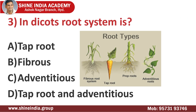The third question: in dicots, the root system is? Observe the picture. In monocots, we see the fibrous root system, and as you can see in the picture, the dicots have a very well developed tap root system. Tap root system develops one single strong and main root that grows vertically into the ground.